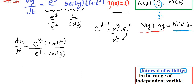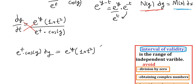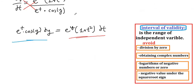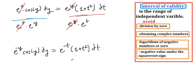Our next step is to cross multiply, giving e^t times cosine y dy equals e^y times (1 plus t squared) dt. We want t terms on the right and y terms on the left, so we divide the whole equation by e^y and by e^t simultaneously. We obtain e^(-y) times cosine y dy equals e^(-t) times (1 plus t squared) dt. Our differential equation is now fully separated.